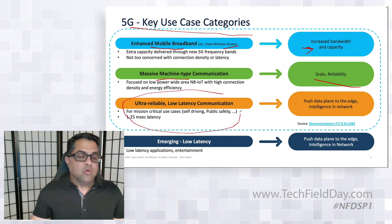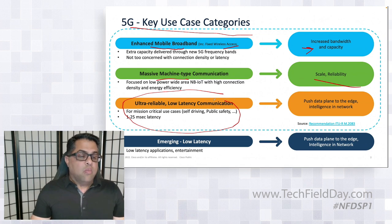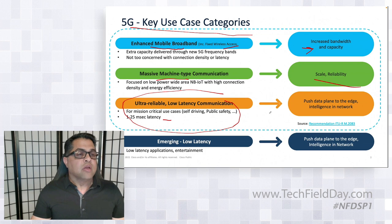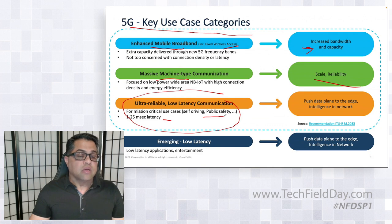The third use case is totally new — this is the one which didn't exist in LTE at all. That's ultra reliable low latency communication, meaning mission critical use cases. Basically we are looking at service latencies of 1 to 25 milliseconds. Just to give you an idea, today's radios only have a 25 millisecond round trip latency, and in this case you are talking about the entire service being 1 to 25 milliseconds.